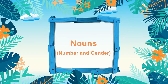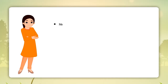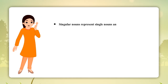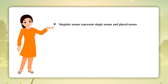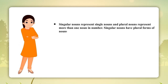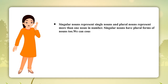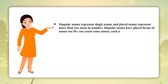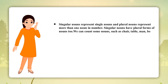Number and Gender: Singular nouns represent single nouns and plural nouns represent more than one noun in number. Singular nouns have plural forms too. We can count some nouns such as chair, table, man, boy, girl, etc.